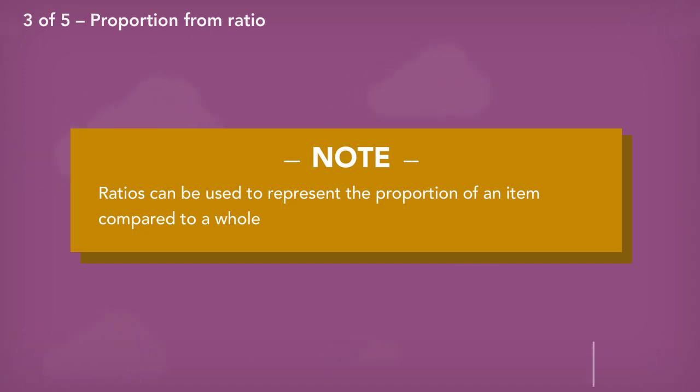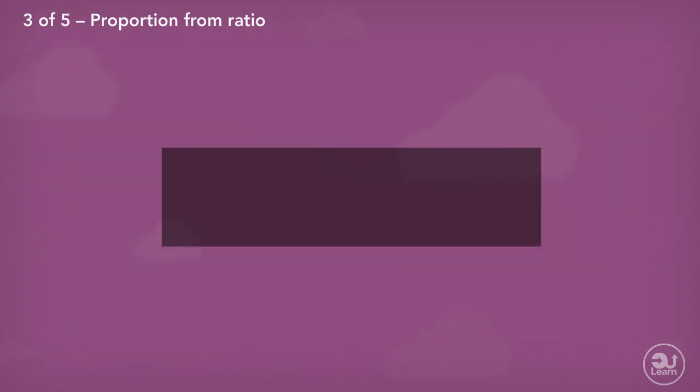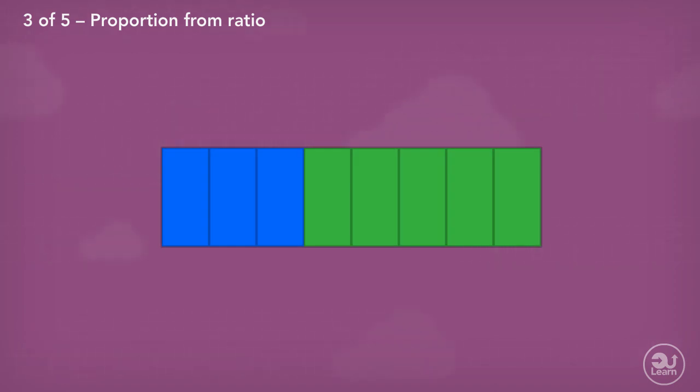Ratio can be used to identify the proportion of something in a whole. This proportion can then be represented in different ways such as fractions, decimals, and percentages. This image represents a whole when divided into equal parts, with some blue and rest green. What is the ratio of blue to green? The ratio is three to five.